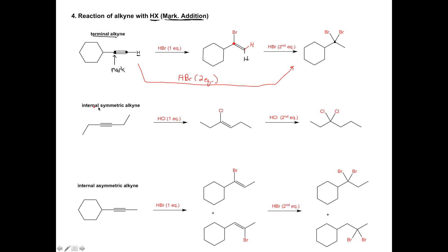Let's look at the example when we have an internal symmetric alkyne with HCl. The internal alkynes are different because there is no Markovnikov position — these carbons have no hydrogens and are both connected to carbons. When your alkyne is symmetric, you're going to add an H to one side and a chlorine to the other. Because it's symmetric, it doesn't matter which side you pick. With one equivalent, you add an H to one side and a chlorine to the other, giving the same product regardless of which side you choose.